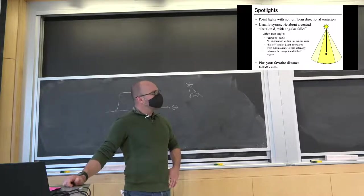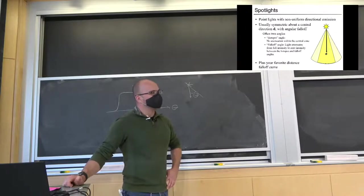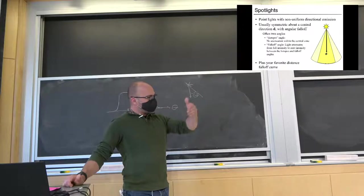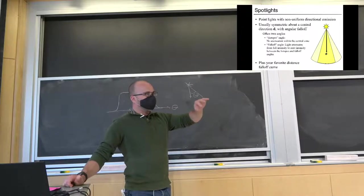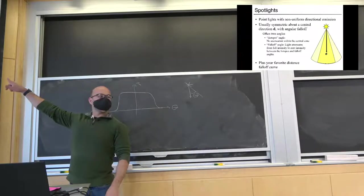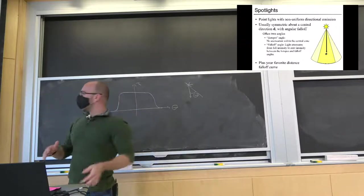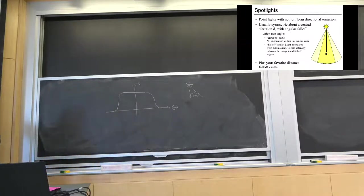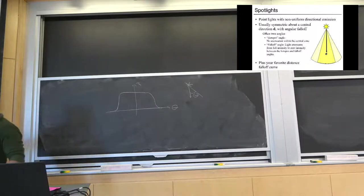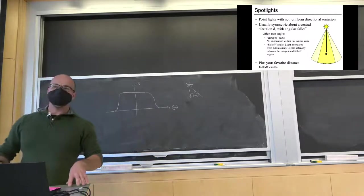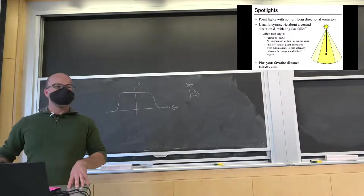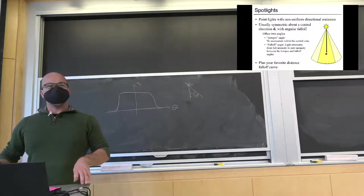You would still probably use the inverse square law for a spotlight and just multiply these things together. The spotlight takes care of the angular effect — at the central point, different amounts of light go in different directions — whereas 1 over r squared deals with the fact that the cross-section farther away is larger.